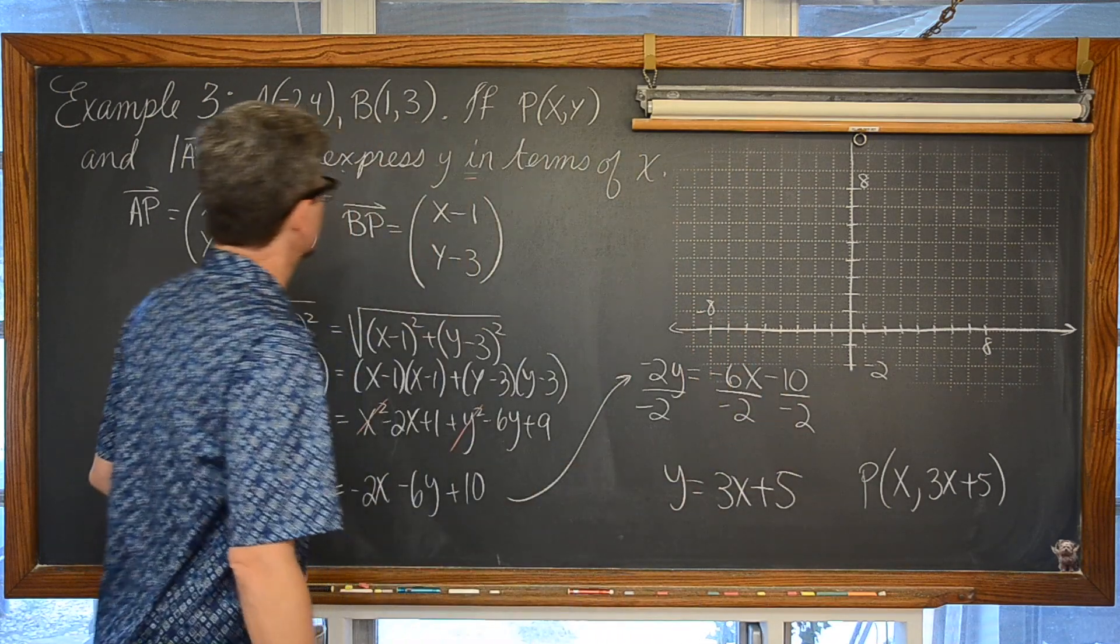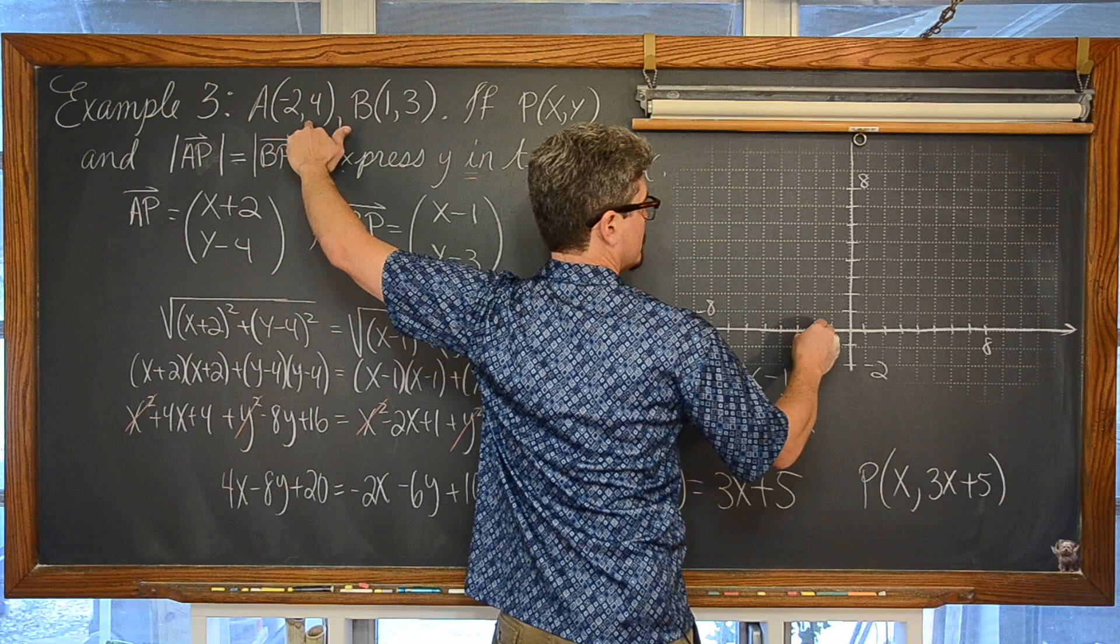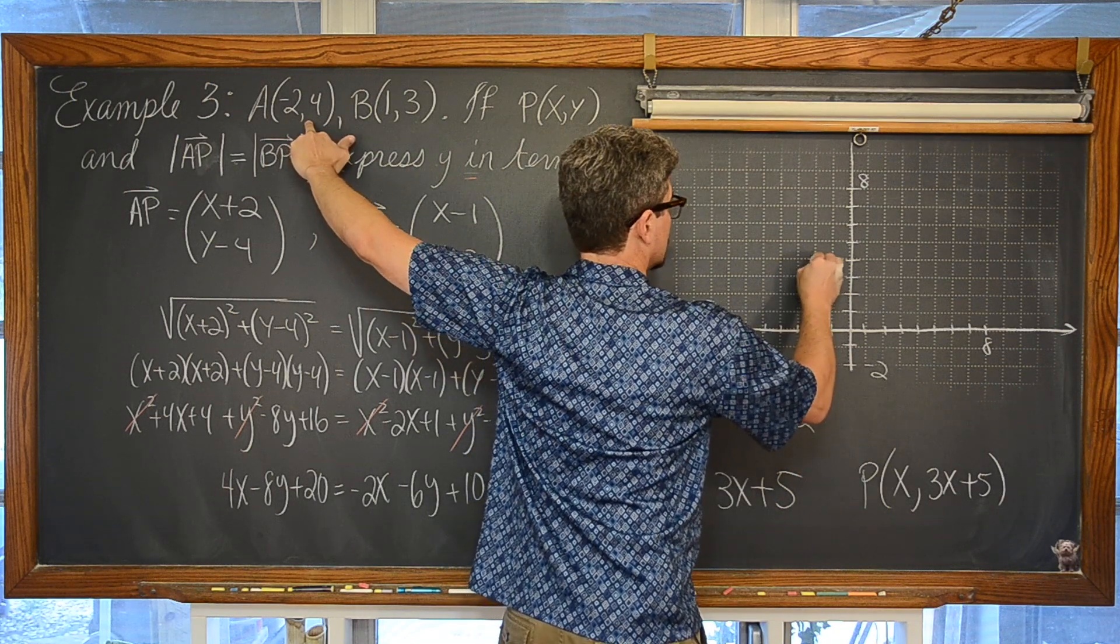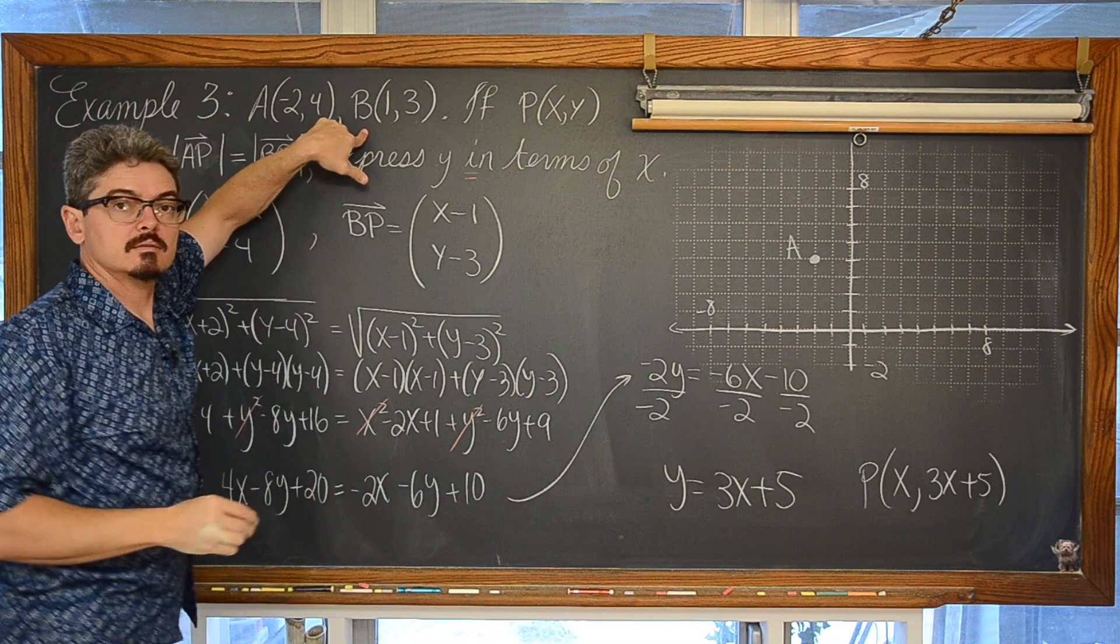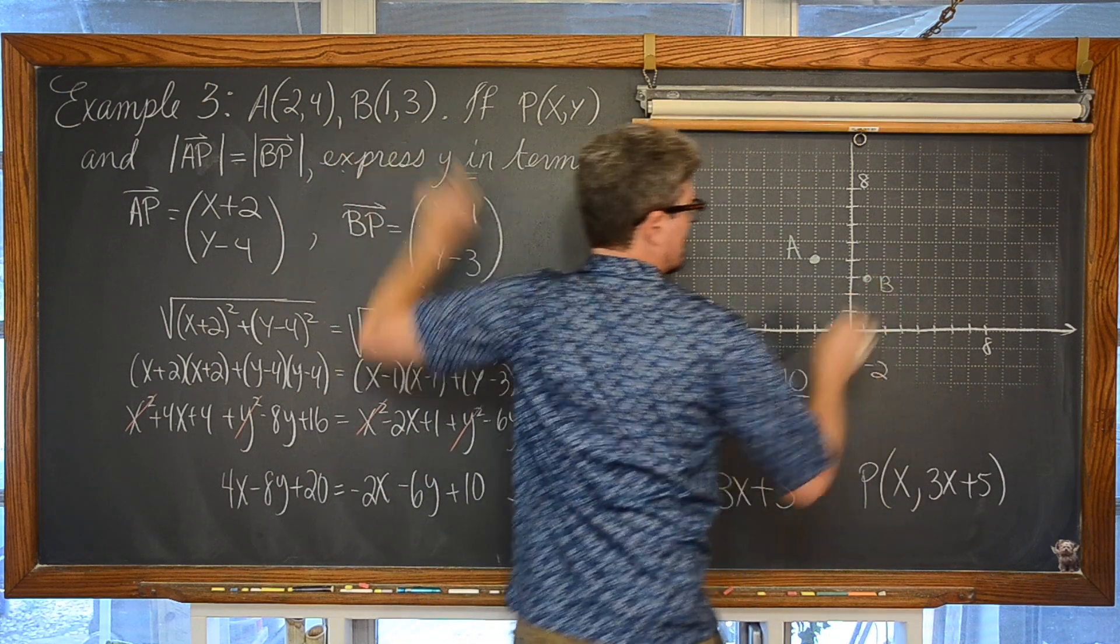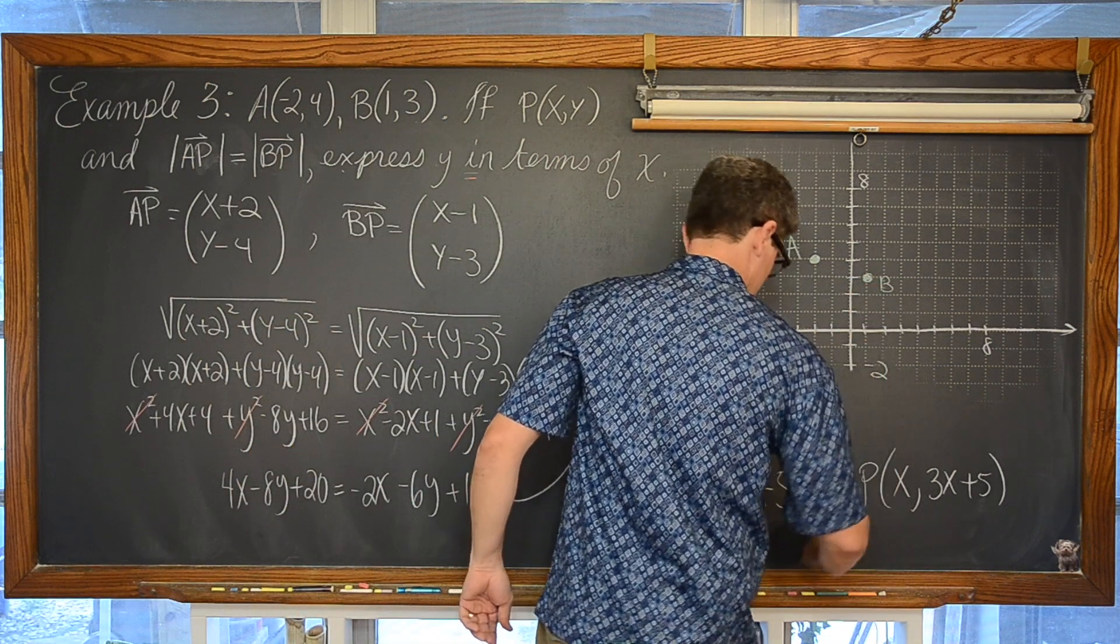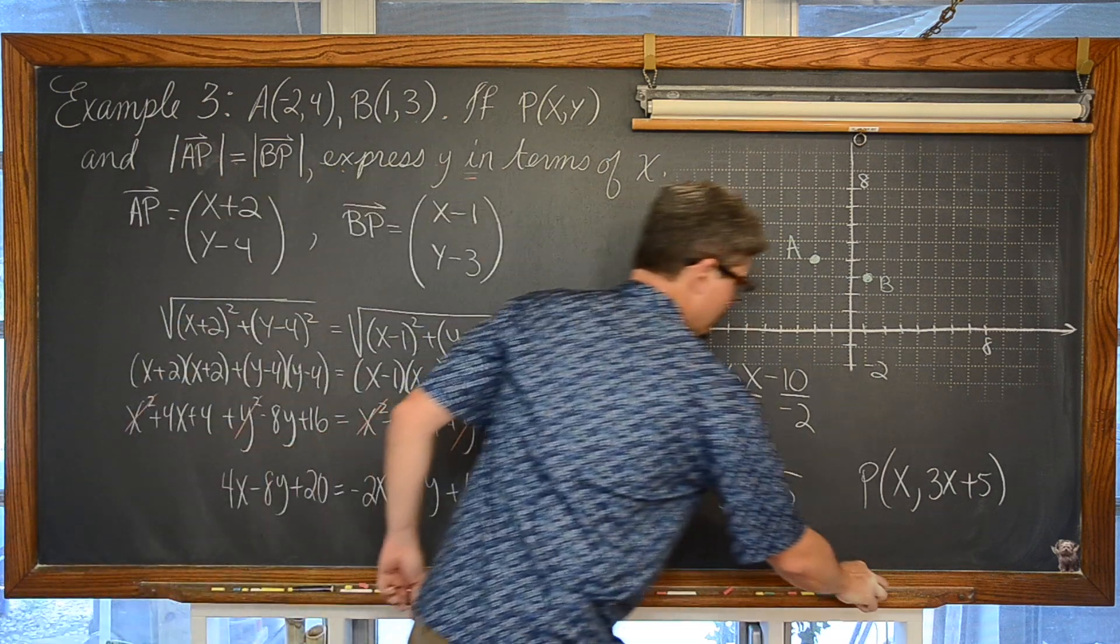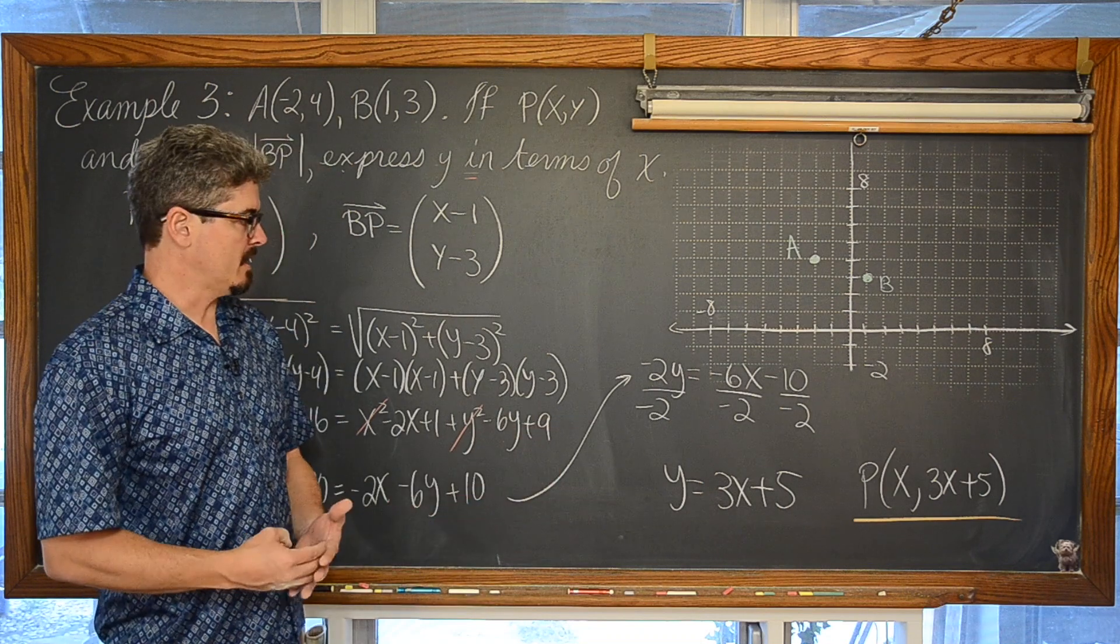Okay, so every tick mark is 1. We have got the point negative 2, 4. So left 2 and up 4. That is coordinate A. We have got coordinate B which is 1, 3. So over 1 and up 3.